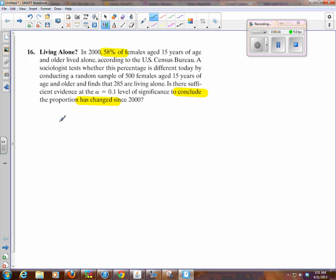So to do a significance test, we want to say that the null hypothesis is that the proportion hasn't changed, that it's still the same as it was back in 2000 at 58% or 0.58. And then, since we don't know a direction, they're not telling us whether it's greater than or less than, we're going to use a two-tailed test, so it's not equal to 0.58. This has changed.